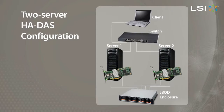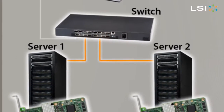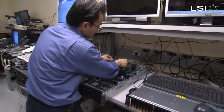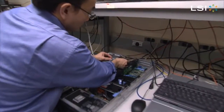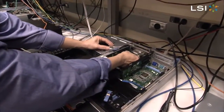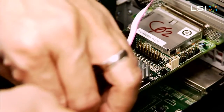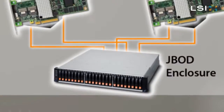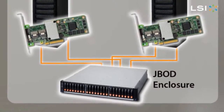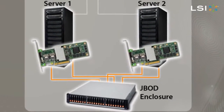This is a typical two-server HA setup in a data center or small business. In this setup, the client's or end-user system connects through a switch via Ethernet to Server 1 and Server 2. Each server has an LSI HA-DAS MegaRaid controller with 2x4 external SAS connectors. The connectors cable out into a JBOT storage enclosure redundantly.